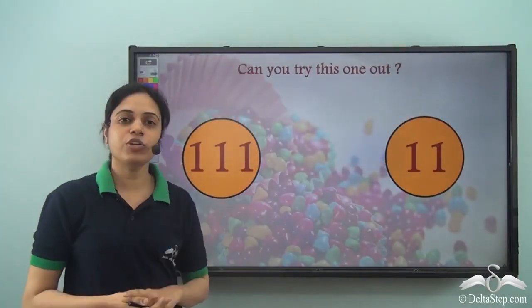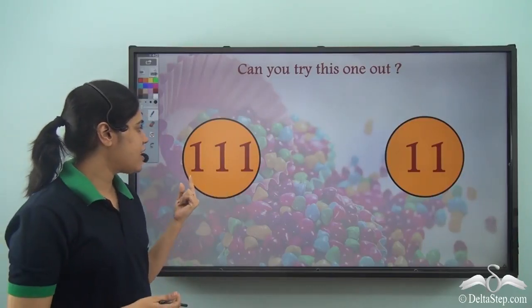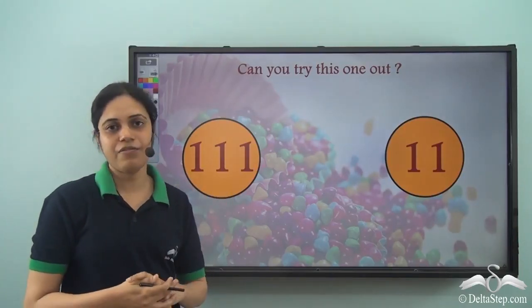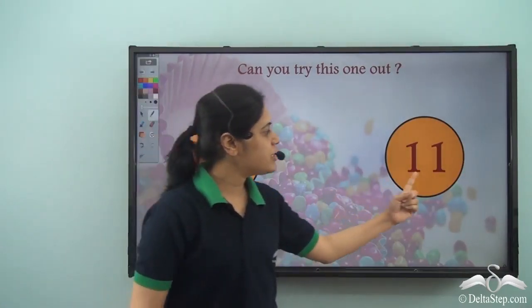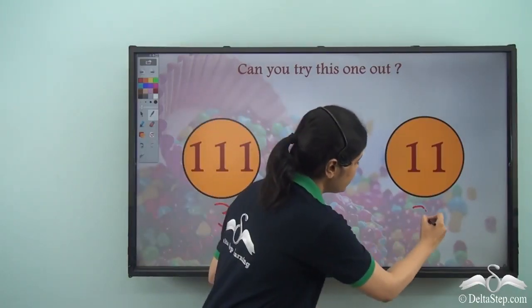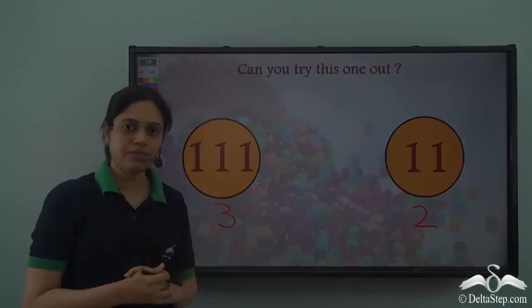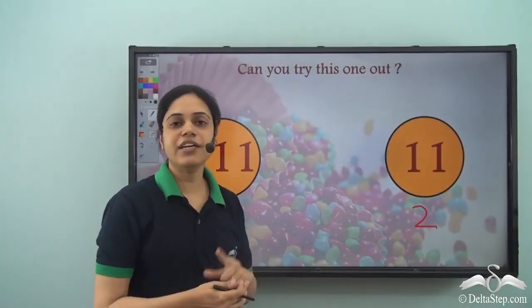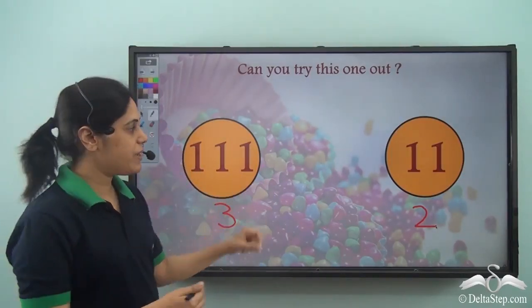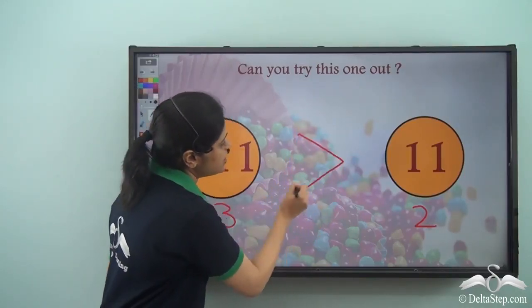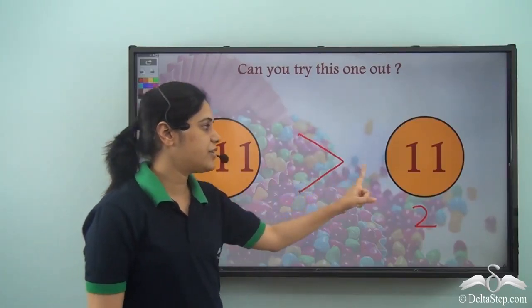Now can you try this one on your own? How many digits does one-one-one have? One hundred eleven has three digits. And how many digits are there in eleven? Just two. So the number with more digits is greater — one hundred eleven is greater than eleven. The mouth will be open towards the bigger number, so 111 is greater than 11.